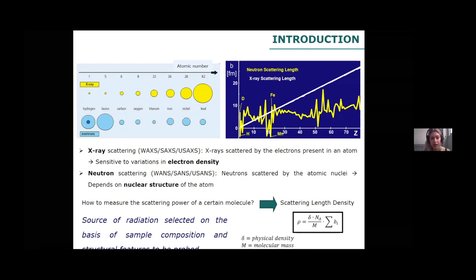We have two main sources of radiation: X-rays and neutrons. This is very important. In the case of carbohydrates, X-rays highlight differences in crystalline and amorphous domains because they are sensitive to variations in electron density. For instance, in the case of cellulose, X-rays generate contrast between crystalline and amorphous cellulose. In the case of neutrons, since they are scattered by atomic nuclei, they depend on nuclear structure, which means we can play around by substituting hydrogen atoms in our sample with deuterium to generate contrast.